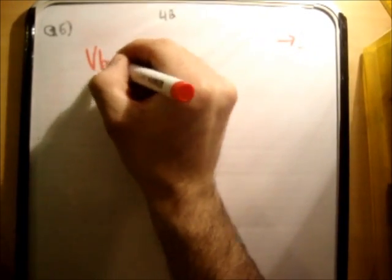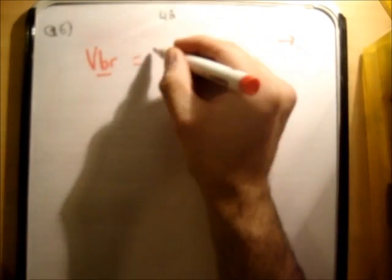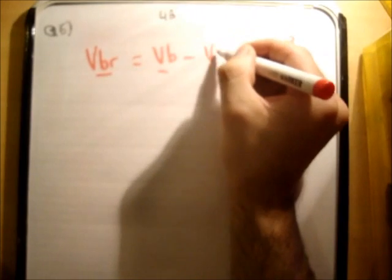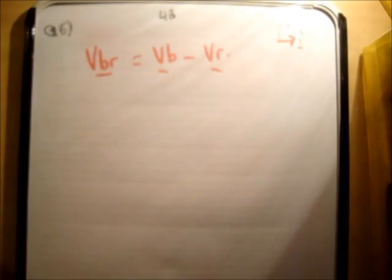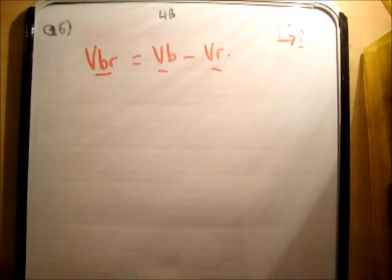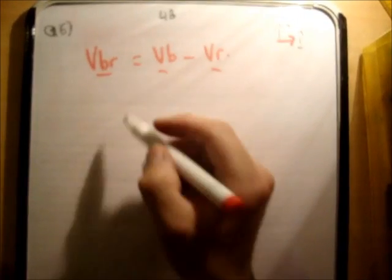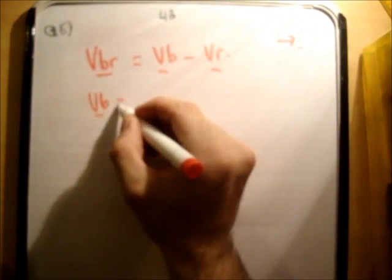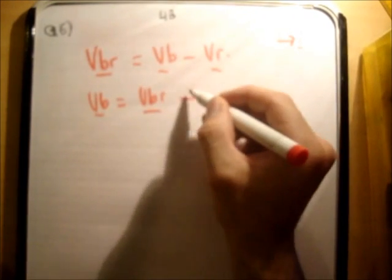So what we're given is, let's look at the formula v boat relative to the river, vbr, is equal to vb minus vr. And these are vectors, so this is just addition of vectors. So let's just do this. So we want to find the velocity of the boat, so vb is equal to vbr plus vr.